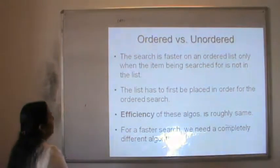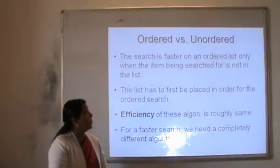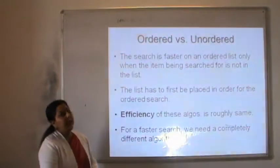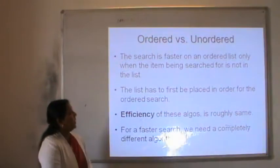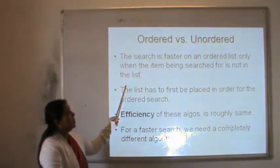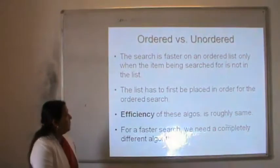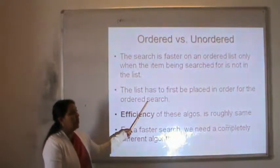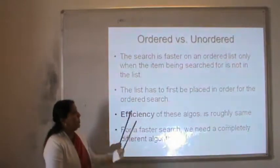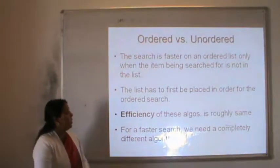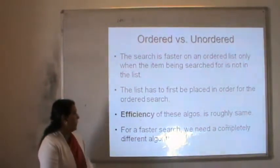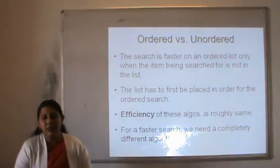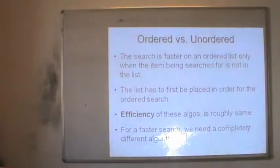When we compare ordered and unordered search, the search is always faster on an ordered list when the item being searched for is not in the list. The list has to be placed in order for the ordered search, but this is not required for the unordered one. The efficiency of these algorithms is roughly the same, and for a faster search we need a more efficient algorithm than linear search.